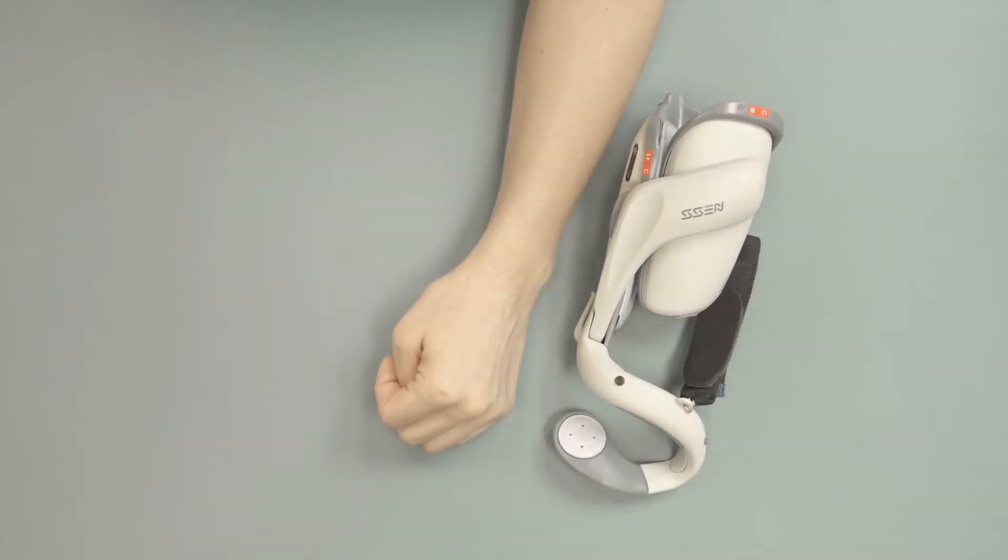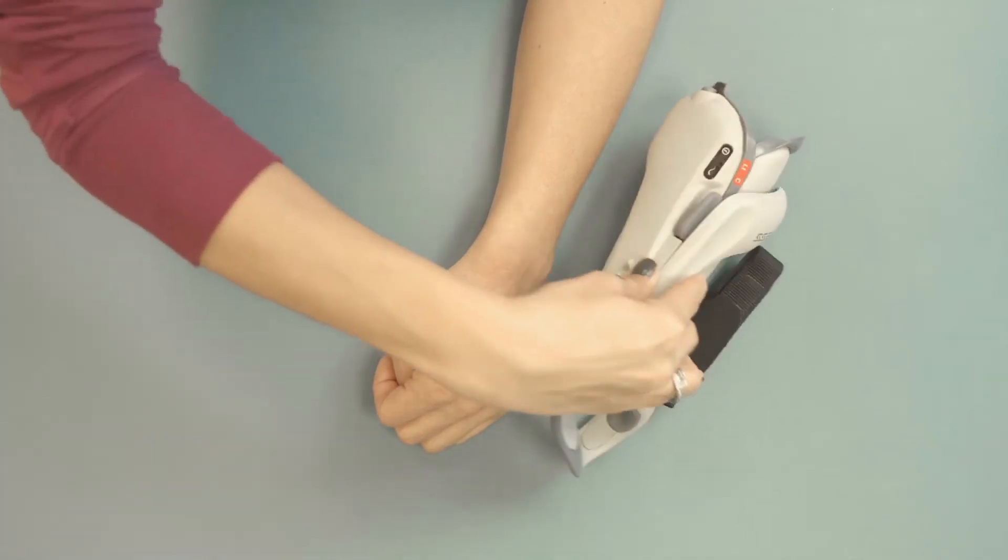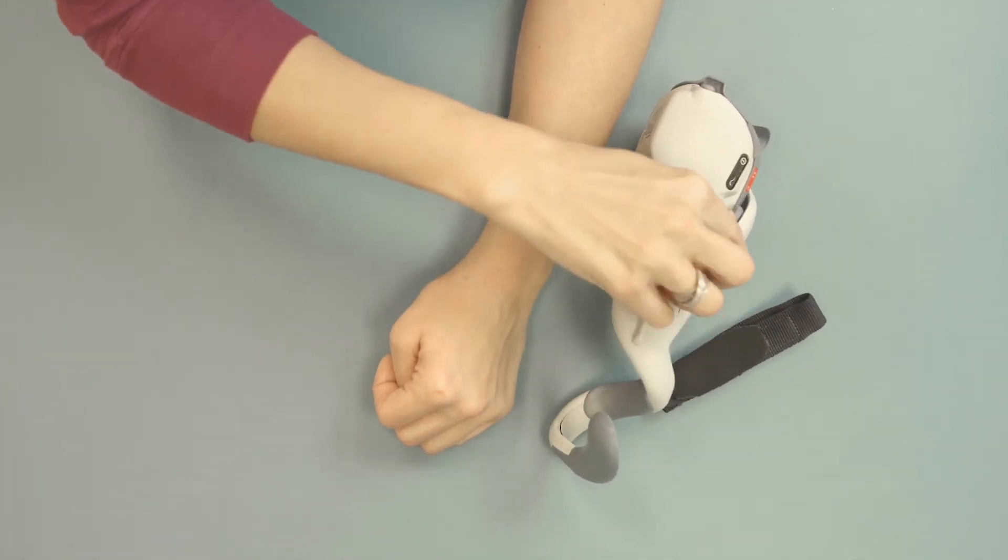Begin by placing the H200 orthosis on a stable surface like so. Open the extensor wing by gently squeezing the purple tab and sliding it away from you.